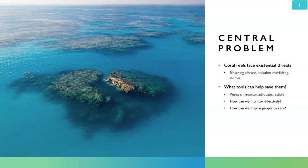So what do we do? We need to research and understand how reefs work so we can be more effective in protecting them. We need to monitor their decline, advocate and educate leaders to create policies that help keep them alive, and in the interim, restore reefs by growing and outplanting corals. I'm going to talk about how we can monitor reefs at a large scale and create products that help inspire people to care.